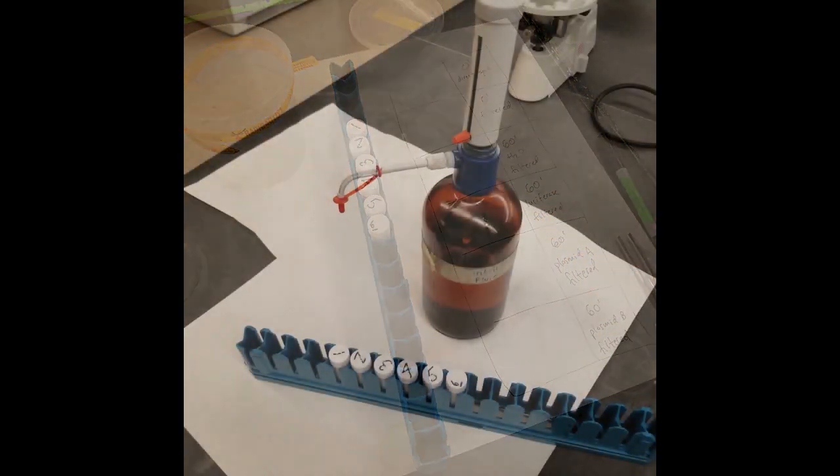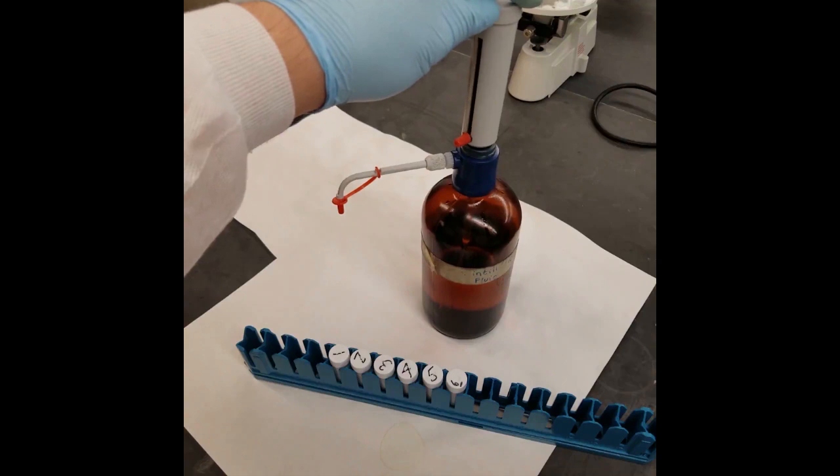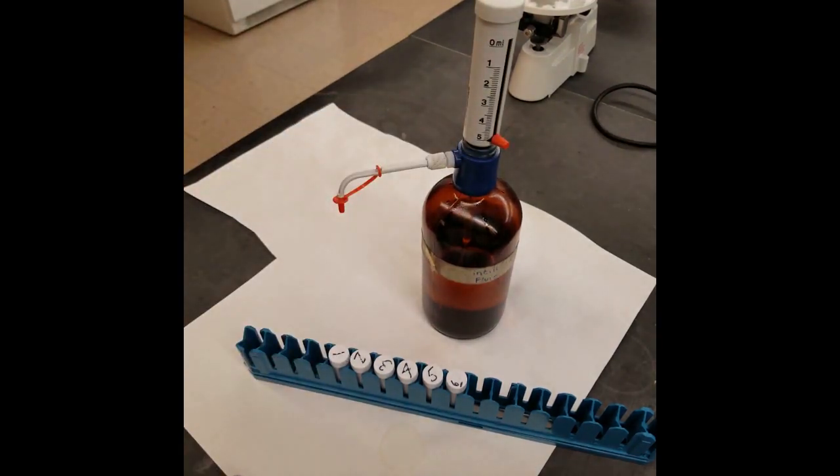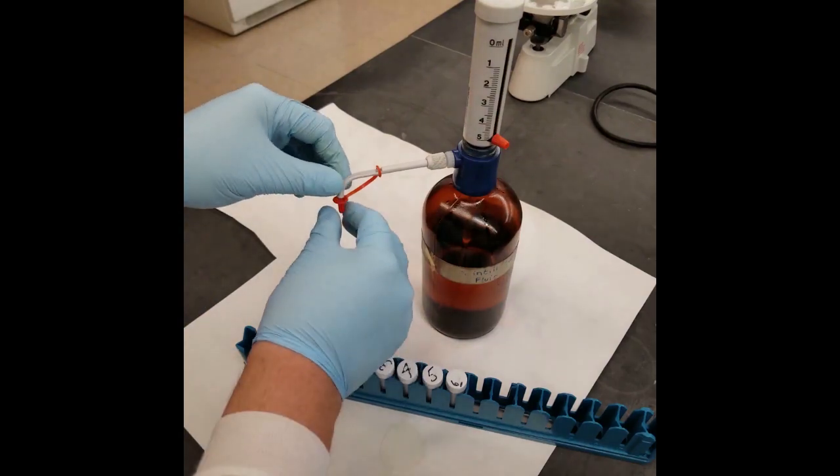Take your vials containing your filter samples to the scintillation fluid station in the lab. Notice that the dispenser will already be set to dispense 5 milliliter volumes per pump.